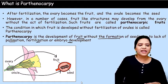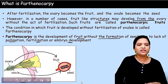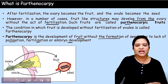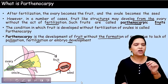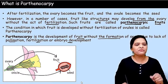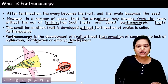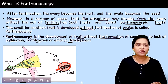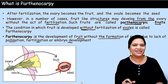In a number of cases, fruit-like structures develop from the ovary without the act of fertilization. Such fruits are called parthenocarpy fruits — fruits which are developed without fertilization of the ovules. They don't have any seeds because the ovule is not developed or mature.